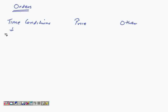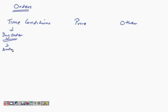In a time condition, there's something called a day order, which basically means that if you've entered an order for a particular day and you've not squared off that order, it will automatically get squared off at the end of that day. Whatever order you enter will be relevant only for that particular day. That's simply a day order.